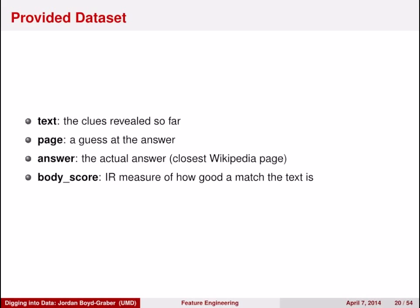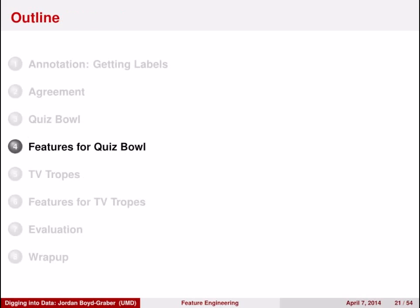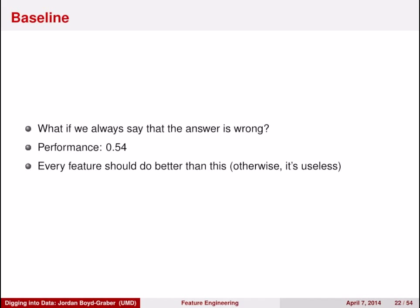So let's see what sorts of features we can build from this information. And hopefully these features will improve the ability to classify a question-guess combination as correct or not. So first, let's figure out where we're starting from. What if we had a classifier that just said, this guess is wrong? So on the data set that I provided you, that gives you a performance of 0.54. So any feature and any classifier that we learned from that feature should hopefully do better than this. Otherwise, it isn't helping.